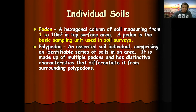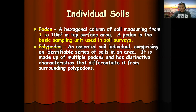We also have the polypedon. From the word 'poly,' it is a group of pedons — an essential soil individual comprising an identifiable series of soils in an area. While a pedon is an individual representation of a soil in an area, a polypedon is a series of soils in an area — it is broader. It is made up of multiple pedons and has distinctive characteristics that differentiate it from surrounding polypedons.